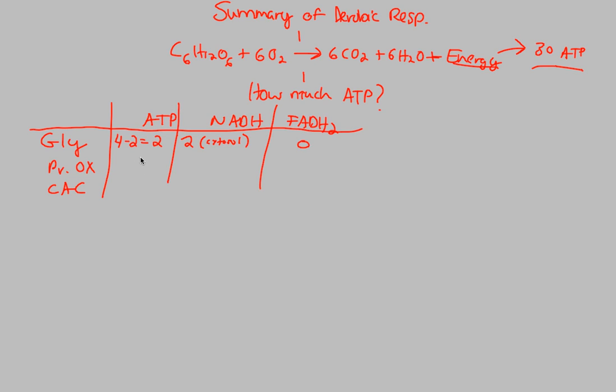During pyruvate oxidation, if you go back, no ATP was created. There were two molecules of NADH created, but again, where were they created? They were actually created now, finally, in the mitochondrial matrix. And now we have zero also molecules of FADH2.